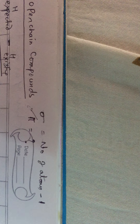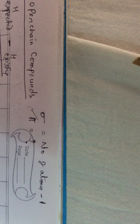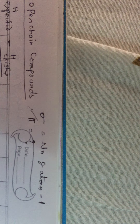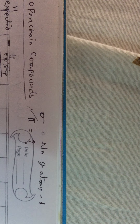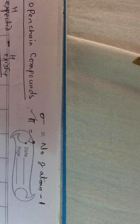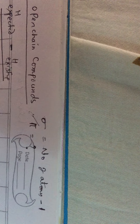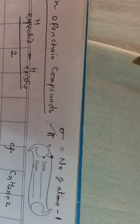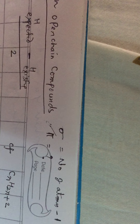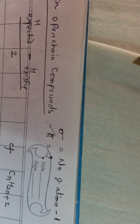If degree of unsaturation equals 1 and it is not an open chain structure, it indicates one ring. If degree of unsaturation equals 2, it has two pi bonds, or possibly one ring and one pi bond, or two rings. If degree of unsaturation equals 3, it implies three pi bonds, or three rings, or one ring and two pi bonds, or two rings and one pi bond.